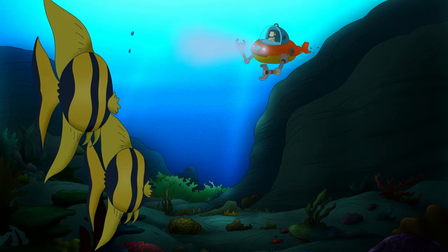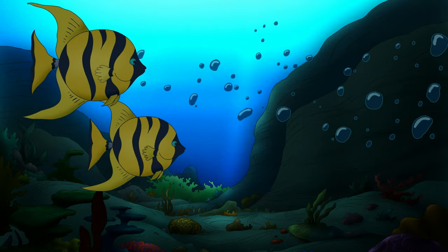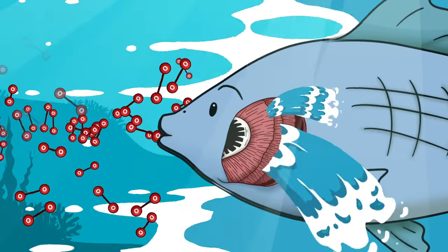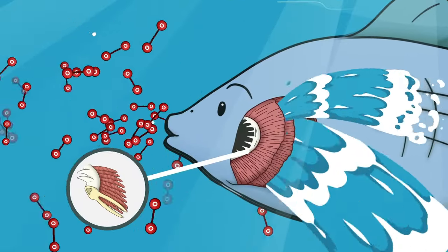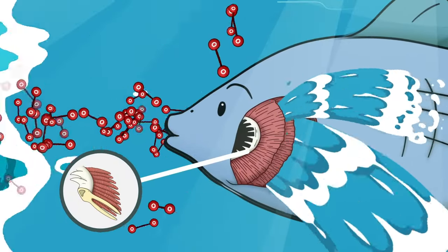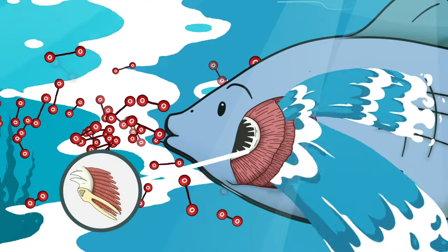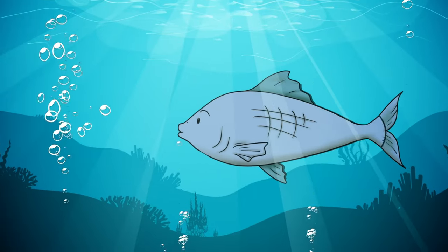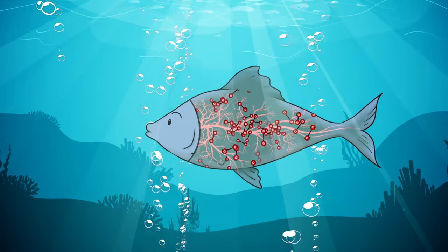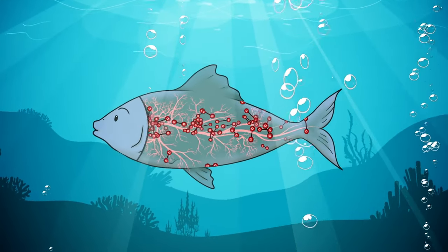The fish takes water in through its mouth and then pushes the water out through its gills. There are lots of tiny little blood vessels in the fish's gills. When the water is being pushed out of the gills, the oxygen molecules get absorbed by those little blood vessels. Then the oxygen molecules flow around the fish's body in its bloodstream, just like us.